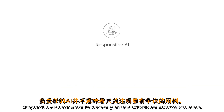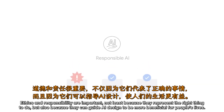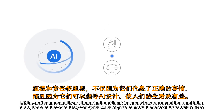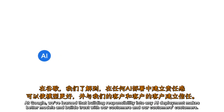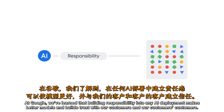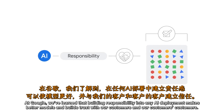Responsible AI doesn't mean to focus only on the obviously controversial use cases. Without responsible AI practices, even seemingly innocuous AI use cases, or those with good intent, could still cause ethical issues or unintended outcomes, or not be as beneficial as they could be. Ethics and responsibility are important, not least because they represent the right thing to do, but also because they can guide AI design to be more beneficial for people's lives. At Google, we've learned that building responsibility into any AI deployment makes better models and builds trust with our customers and our customers' customers.